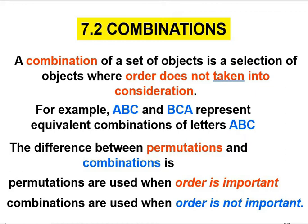Before we go further I would like to give a brief definition of what combination really is. Combination is when a set of objects is selected and order does not taken into consideration. For example, ABC and BCA represent equivalent combinations of the letters ABC. The difference between permutation and combination is permutations are used when order is important but combinations are used when order is not important.